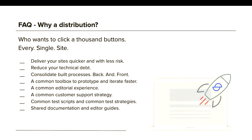So doing distributions — if you have more than two local sites, it's an absolute no-brainer. Who wants to click a thousand buttons every single site? You can deliver your sites quicker and with less risk, use your technical depth, consolidate your build processes back and front. You have a common toolbox to prototype and iterate faster, a common editorial experience, a common customer support strategy, common test scripts, common test strategies, and shared documentation and editor guides. We're going to tell you how we met all of those goals in the Sector story.